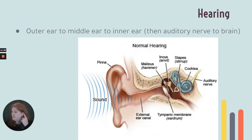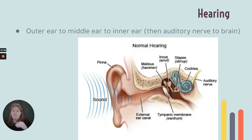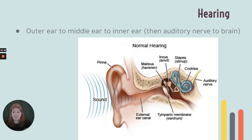Hearing starts with the pinna — the outer ear collects sound vibrations. Sound is caused by vibration; put your hand on a speaker and you'll feel it. The vibrations go down the ear canal and bang into the eardrum, which vibrates. It sends those vibrations to the malleus, to the incus, to the stapes — those three little ossicles, the bones of the middle ear. Then the stapes causes the cochlea to vibrate. The cochlea is filled with fluid, and little hair cells in the cochlea get triggered by the vibration, turning it into an electrical stimulus sent on the auditory nerve to be processed in our brain.